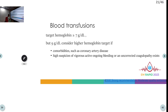For blood transfusion, the target hemoglobin is more than 7 g/dL in most patients. A higher cutoff of more than 9 g/dL is kept for patients with coronary artery disease, high suspicion of vigorous ongoing bleed, or uncorrected coagulopathy.